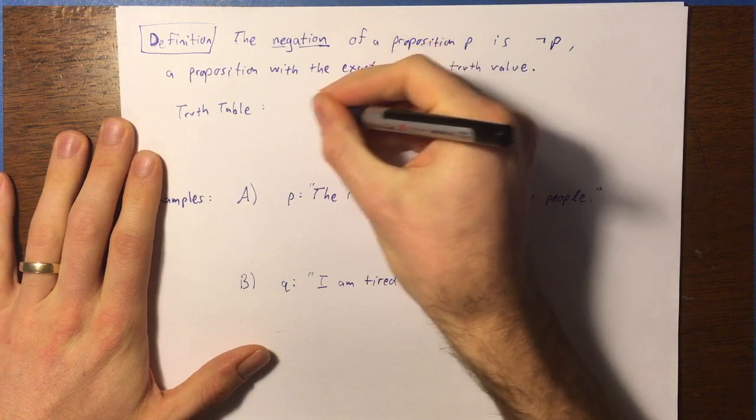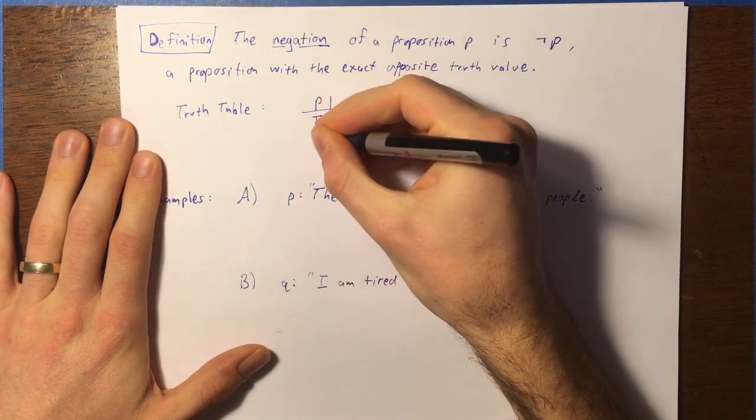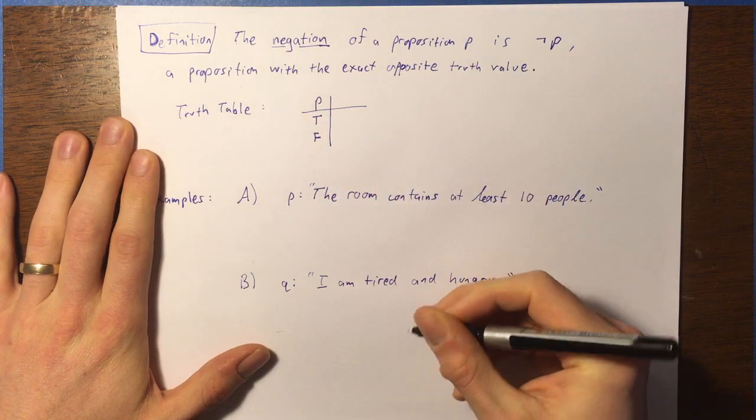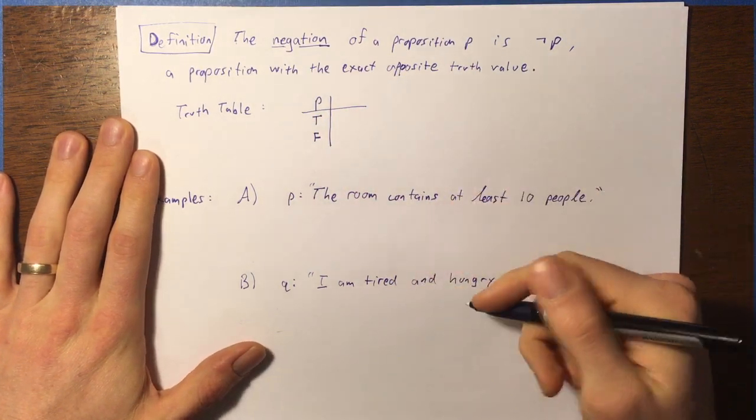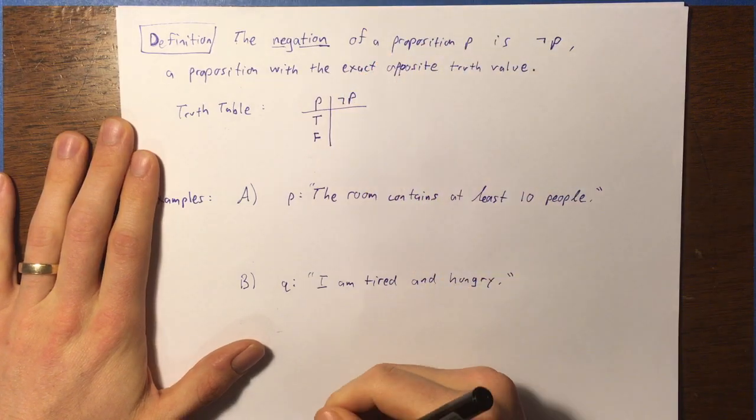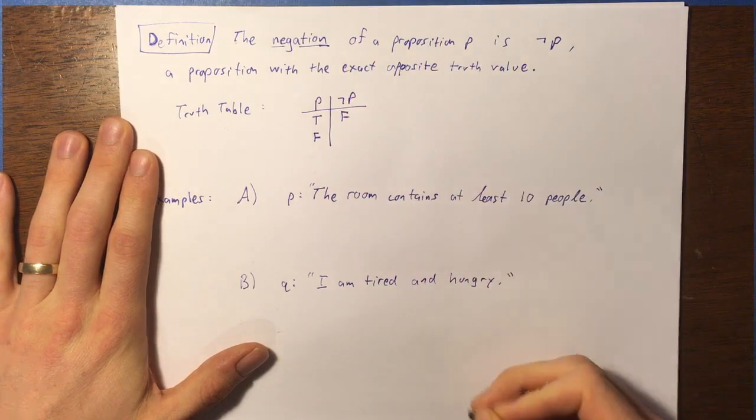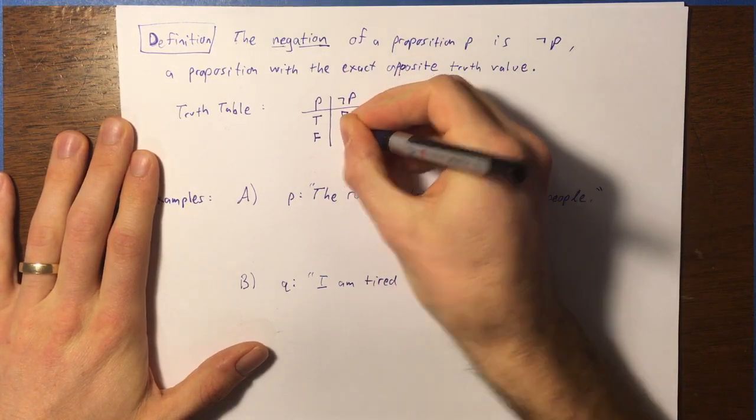So we're going to have a column for the variable P, and it has two possible values, just true and false, like that. And then we'll have one output, which is the negation of P, not P, like that. And so that would have the outputs false when P is true and true when P is false.